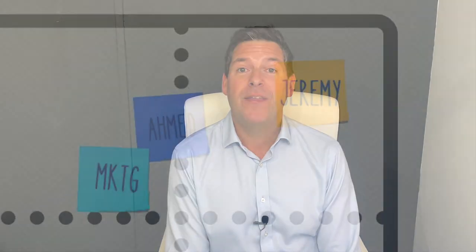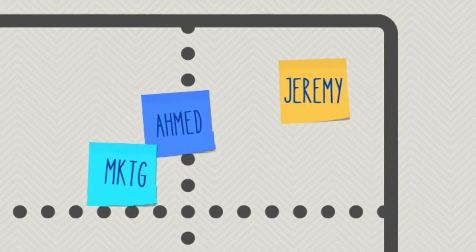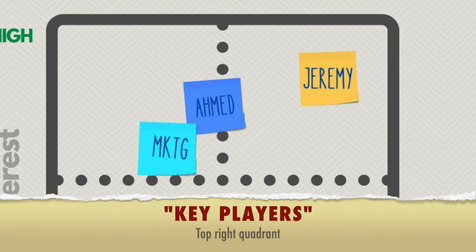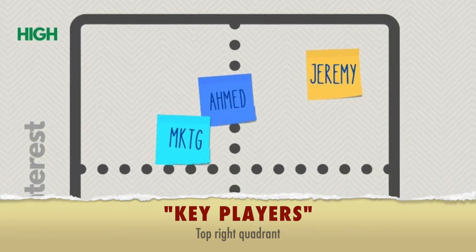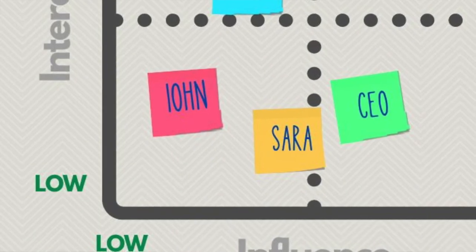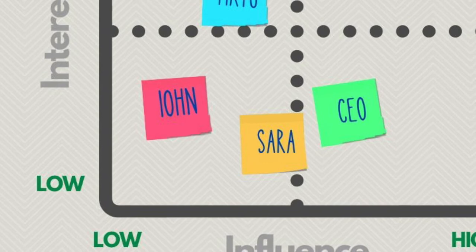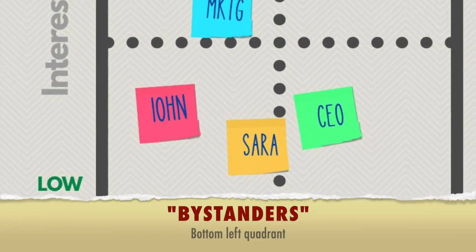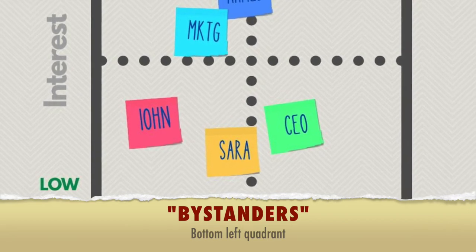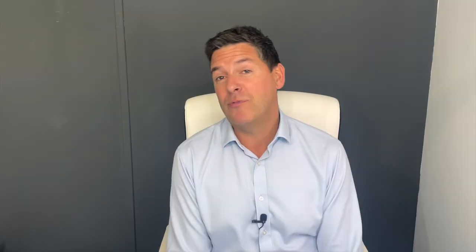Here's how we think about our matrix. The top right-hand corner — high influence, high interest — these are your key players. Keep them on board, keep them informed, make sure they're close to the work you're doing. The bottom left-hand corner — low influence, low interest — these are bystanders. You can largely ignore them; just send some comms, a newsletter every now and again, or a regular project update.